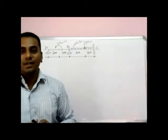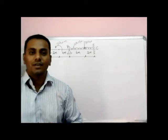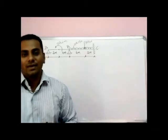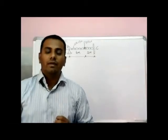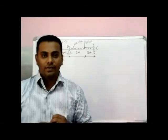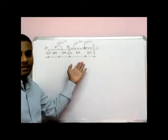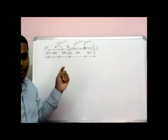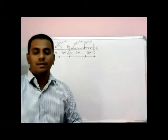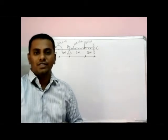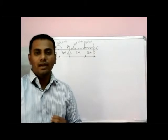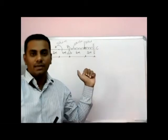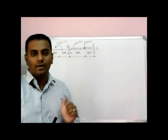Hello everyone. Let us continue with solving problems on continuous beams by Kani's method. Last classes we solved two problems on continuous beam where the end supports were fixed. Today we are solving a continuous beam where the last support A is a hinged support. If the last support is simple, roller, or hinged, then the moment at that particular support will be zero. Let us solve this particular problem.